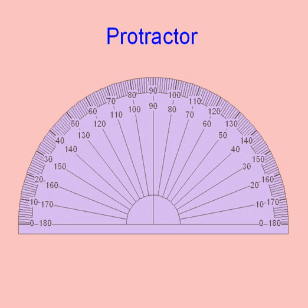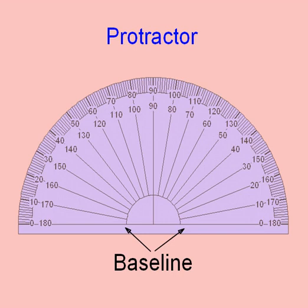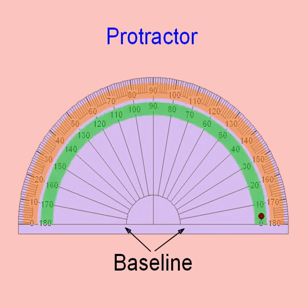We're now going to look at measuring and drawing angles. To do this, you'll need a piece of equipment called a protractor. On the protractor, we have a baseline — this is really important. You can see two scales: the outside scale and the inside scale. A lot of people find it very confusing that there are two scales on a protractor, but hopefully I'm going to help you choose which one to use.